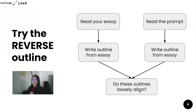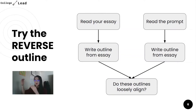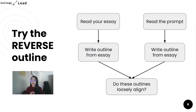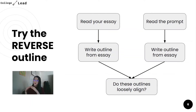One main method I found very useful for sanity checking whether you answered the prompt is the reverse outline. Read your essay and write a reverse outline based on it — for instance, if the first three paragraphs talk about your intro story, label that point one and write one brief summary statement. Then separately look at the prompt and break it down into its own outline. The high-level step is to compare these two outlines — the one from your essay and the one from the prompt — and ask yourself: do these match, or is any part missing?